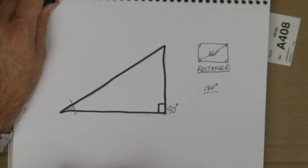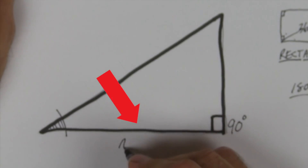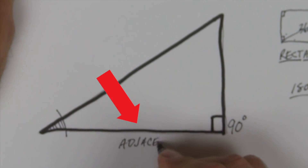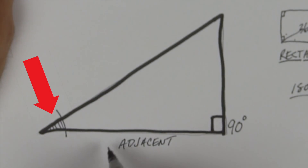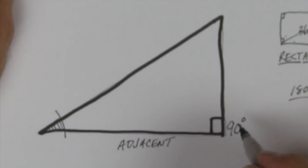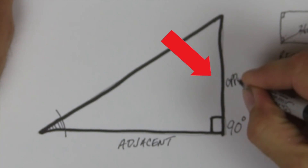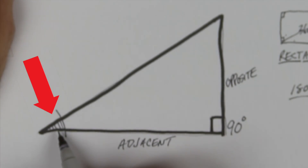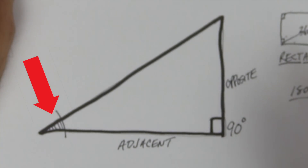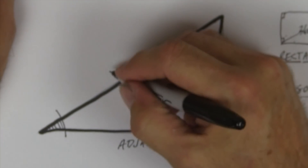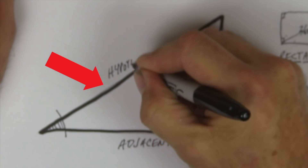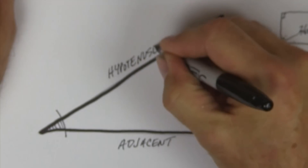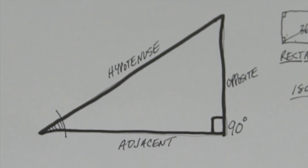Because this is the angle of reference in all of these things we're going to talk about, this side is called the adjacent side because it's adjacent to that angle — it's next to it. Adjacent means next to, just like approximate means close to. And this is called the opposite side for very obvious reasons — opposite is opposite this angle, it's on the opposite side of the angle. And then this is called the hypotenuse because nobody in 2,500 years has come up with a better name for it.